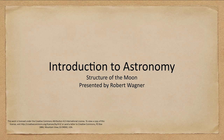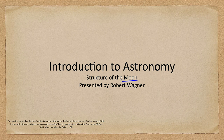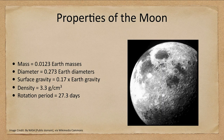Greetings and welcome to the introduction to astronomy. In this lecture, we are beginning our discussion of the moon and we will have a couple of lectures looking at the various properties of the moon. Other than our Earth, it is probably the best explored object in the solar system and the only one to date that humans have actually landed on. So let's get started looking at the moon and let's give it some numbers.